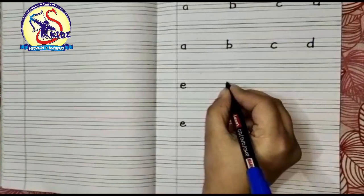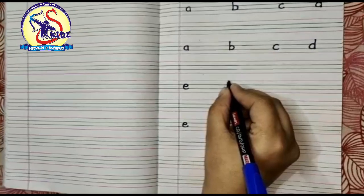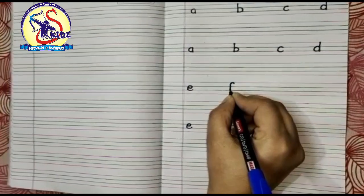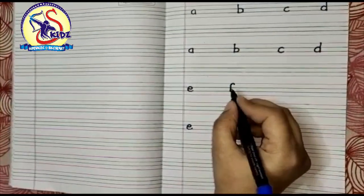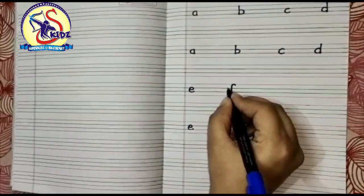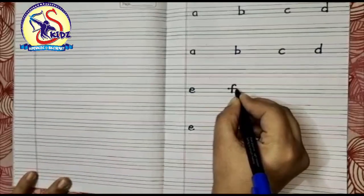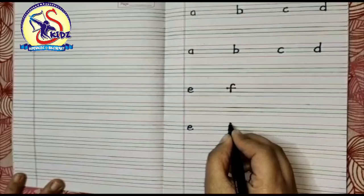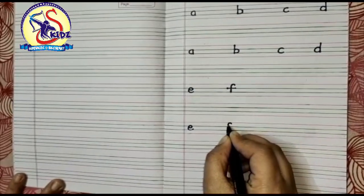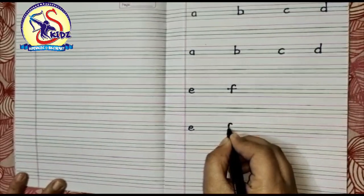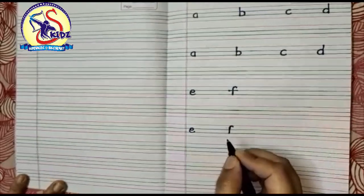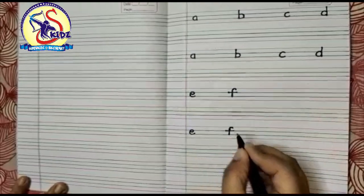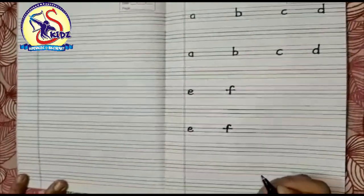Now small f. Start from the top, making a curve, then continue to make a standing line to the bottom, and then go to the middle and make a sleeping line. Start from the top, making a curve, then continue to make a standing line, then go to the middle and make a sleeping line. This is small f.